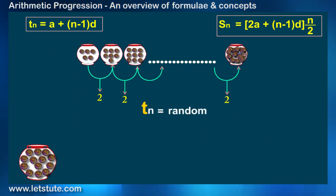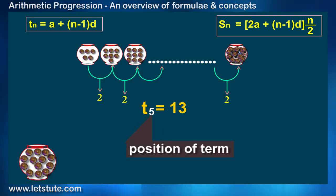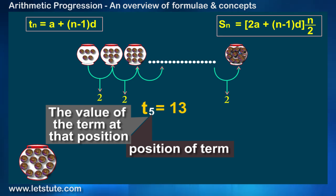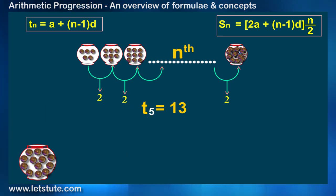But if I say it was the 5th pot, then one would easily say that it is T5 which is 13. Now I guess you must have understood the meaning of n and Tn. So n tells you the position or the number of terms, where Tn represents the value of the term at that particular position.